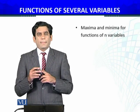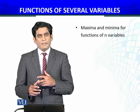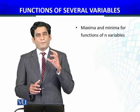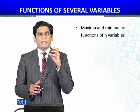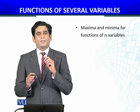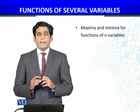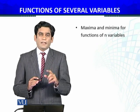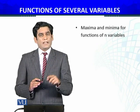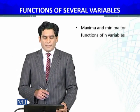First, we define the extreme values — maxima and minima — for functions of several variables. Then we will prove that if x₀ is an extreme point of the domain, all partial derivatives evaluated at that point equal zero. We will also give a counter-example showing that if all partial derivatives are zero at a point, it is not necessarily an extreme value — as we discussed for one variable.